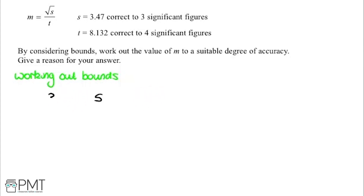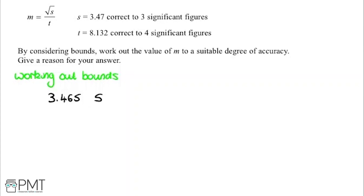The lower bound for s would be 3.465. If you round that to three significant figures, you get 3.47, which is what we need. Remember, anything less than this value — so if we had 3.4649999 and rounded to three significant figures, you'd actually get 3.46. So because of that, we know that 3.465 has to be the lower bound.